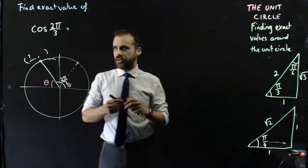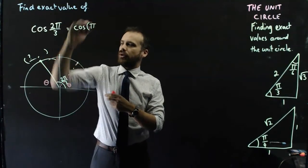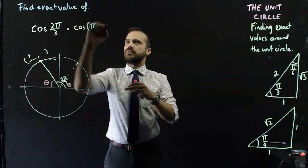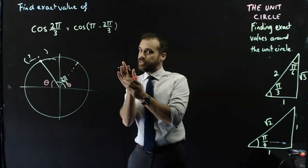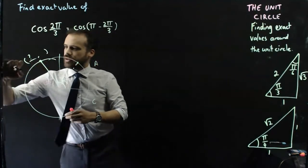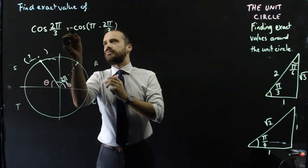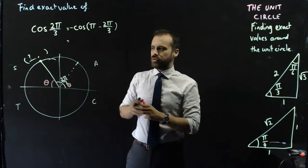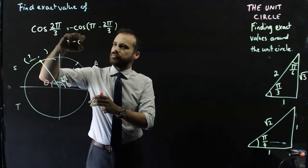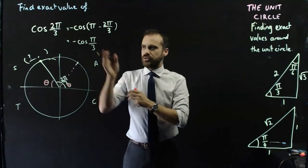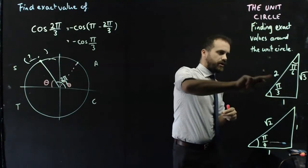If you move it back into quadrant 1, you can see that theta is pi on 3. We can say that cos 2 pi on 3 is equal to cos of pi minus 2 pi on 3. Remember C-A-S-T: we're finding the x-coordinate of that dot, and the x-coordinate is negative. Pi minus 2 pi on 3 is pi on 3. So we have negative cos pi on 3. Pi on 3 — adjacent over hypotenuse — is 1 half.